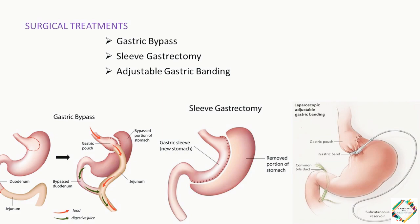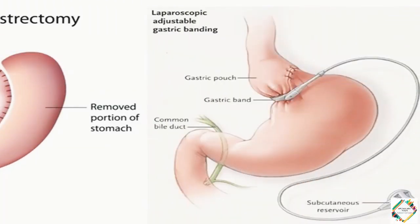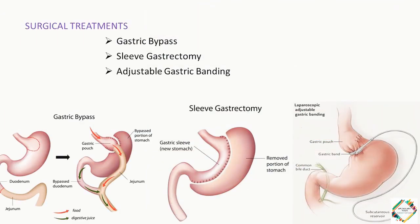Next is the adjustable gastric banding. It is a minimally invasive laparoscopic weight loss surgery. During this surgery, a restrictive band is placed around the upper part of the stomach forming a small pouch with a narrow opening to the lower stomach. An access port connected to the band is placed deep under the skin. The band allows food to be retained in the upper pouch for a longer period of time, causing you to feel fuller more quickly. The food then passes to the lower stomach and digestion happens normally. There is no change in the way food is absorbed; however, vitamin and mineral supplements should be taken because you will be eating less food.